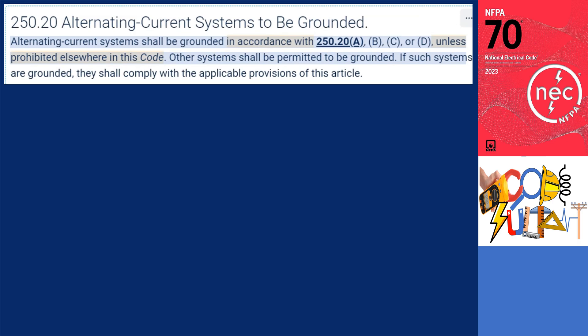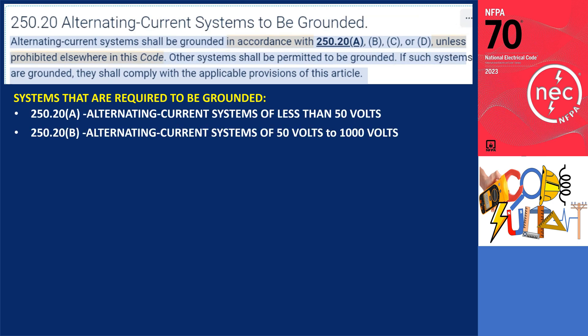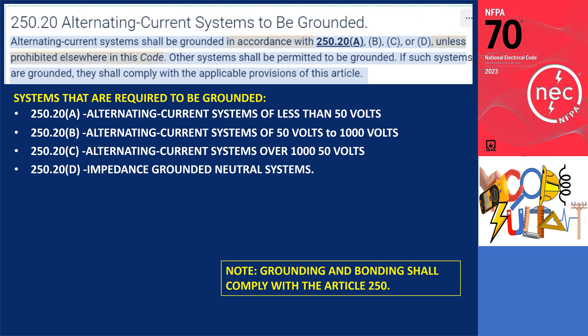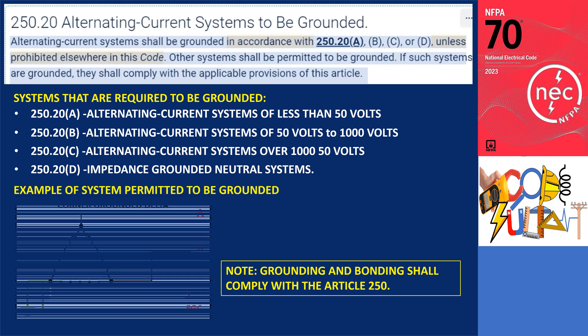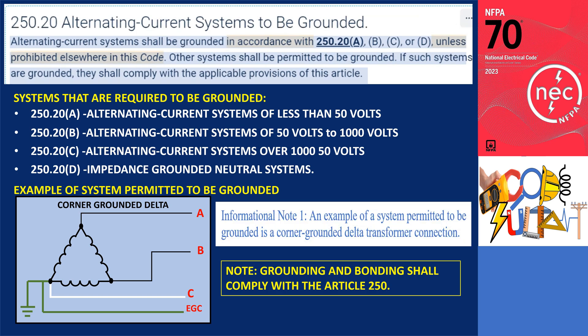Other systems shall be permitted to be grounded. If such systems are grounded, they shall comply with the applicable provisions of this article. Systems required to be grounded are stated in sections 250.20 A, B, C, or D. However, if a system is grounded even though the code does not require it, it shall comply with the grounding rules under this article. An example of an AC system permitted but not explicitly required to be grounded is a corner delta transformer connection, as noted in informational note one of the same section.